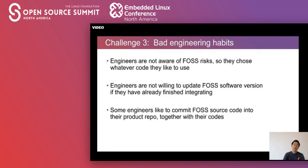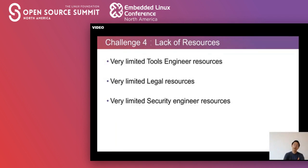Here is the third challenge: the engineers' bad developing habits. Engineers are not aware of OSS risks, so they choose whatever code they like to use. Engineers are not willing to update OSS software versions if they have already finished integrating. And some engineers like to commit OSS source codes into their product repositories together with their own codes. And when it comes to lack of resources, the tooling engineer resources, legal resources, and security engineer resources are all very limited.